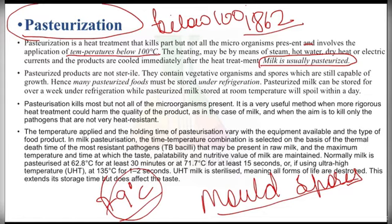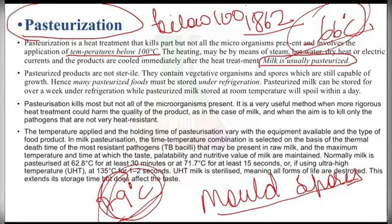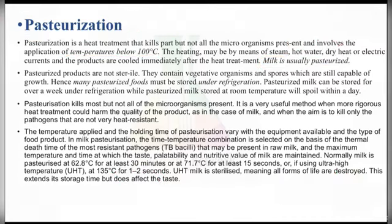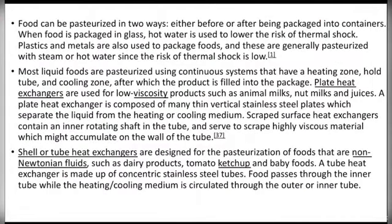Yeast and acid-tolerant bacteria are readily killed when juice is heated for a few minutes at about 66 degrees Celsius. Mold spores are killed by heating at 79 degrees Celsius. Some bacteria have a thermal death time — defined as the time required at a given temperature to kill a stated number of microorganisms under specific conditions. For example, E. coli requires 20 to 30 minutes to be destroyed at a temperature of 57.3 degrees Celsius.